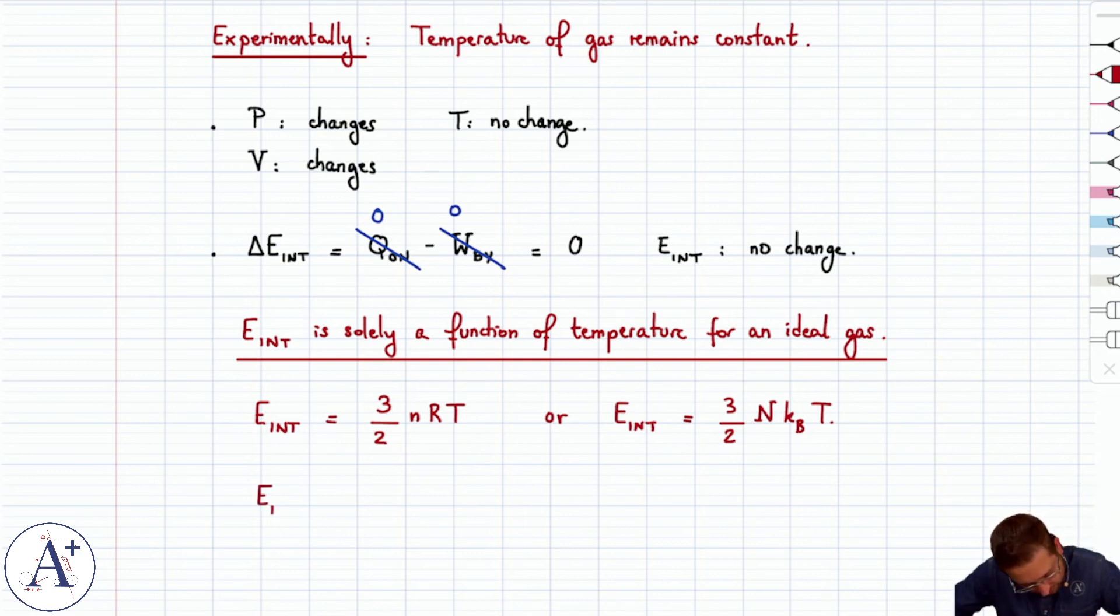And then the internal energy is equal to five halves of NRT or if you prefer five halves of N KBT. We should specify that this is for a monatomic gas and this is for a diatomic gas.